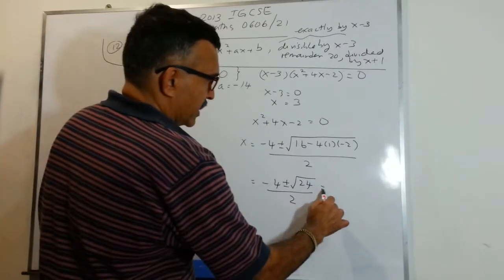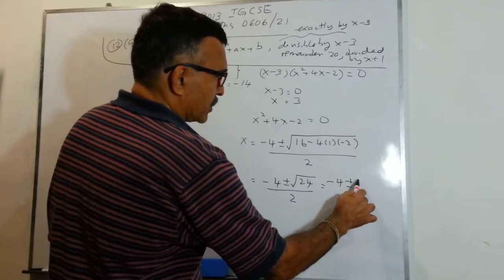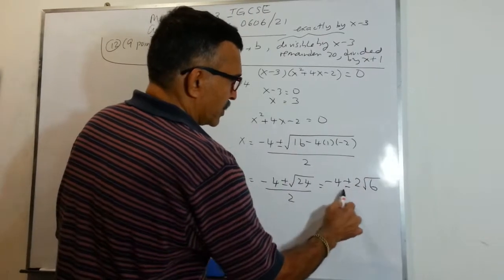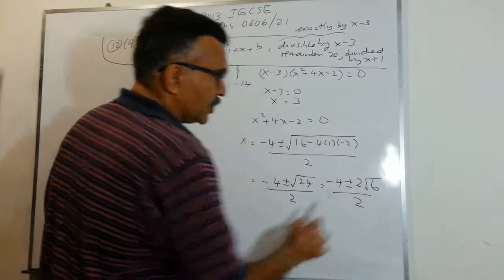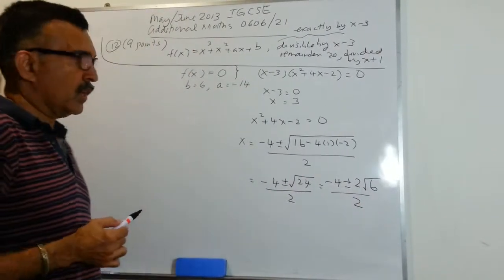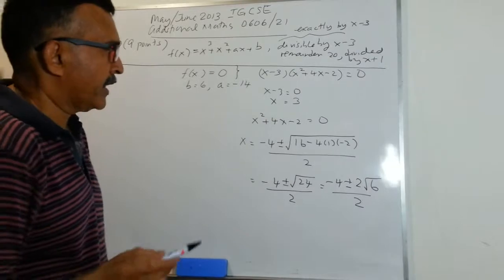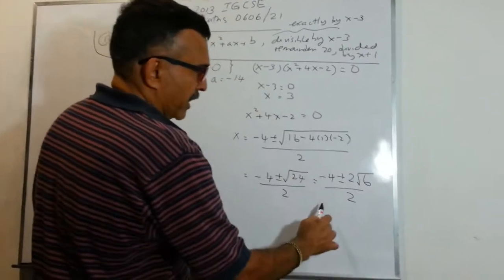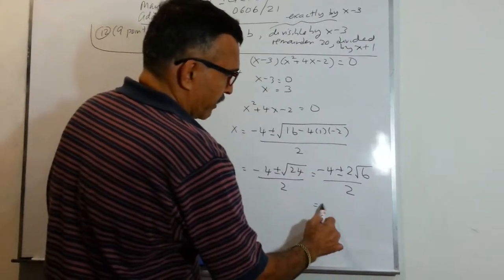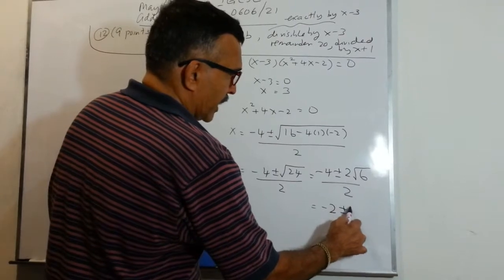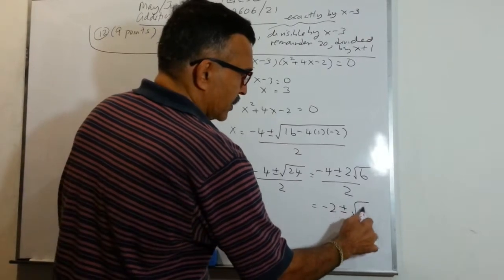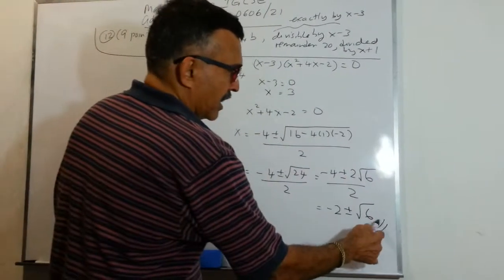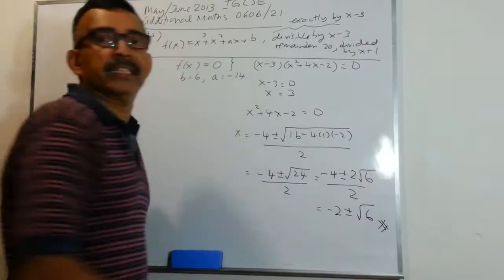We can write this as minus 4 plus or minus 2 square root 6, over 2. Dividing through by 2, we can write our final answer as minus 2 plus or minus square root 6, and we are done.